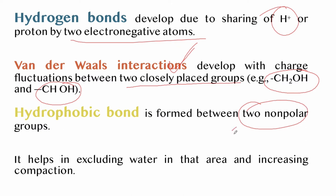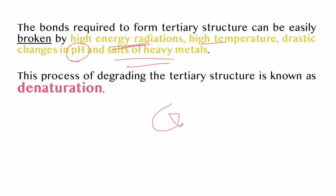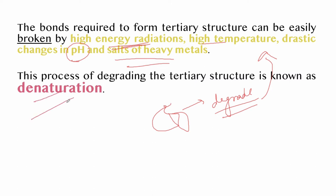The bonds that form the tertiary structure can easily be broken by various factors such as high-energy radiations, high temperature, drastic changes in pH, or salts of heavy metals. When this happens, the tertiary structure of the protein degrades — this process is known as denaturation.